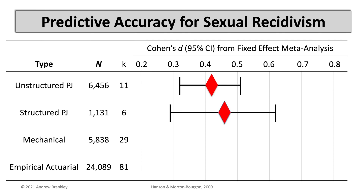Here we can see that structured and unstructured professional judgment performed about the same, because the black bars — confidence intervals for each effect size — overlap, indicating similarity. Both diamonds are red, but keep your eye on the SPJ diamond, because I needed to add some green to indicate that SPJ tools are similar to mechanical tools in accuracy. Mechanical tools did perform better than unstructured judgment, hence the non-overlapping confidence intervals and different colored diamonds.